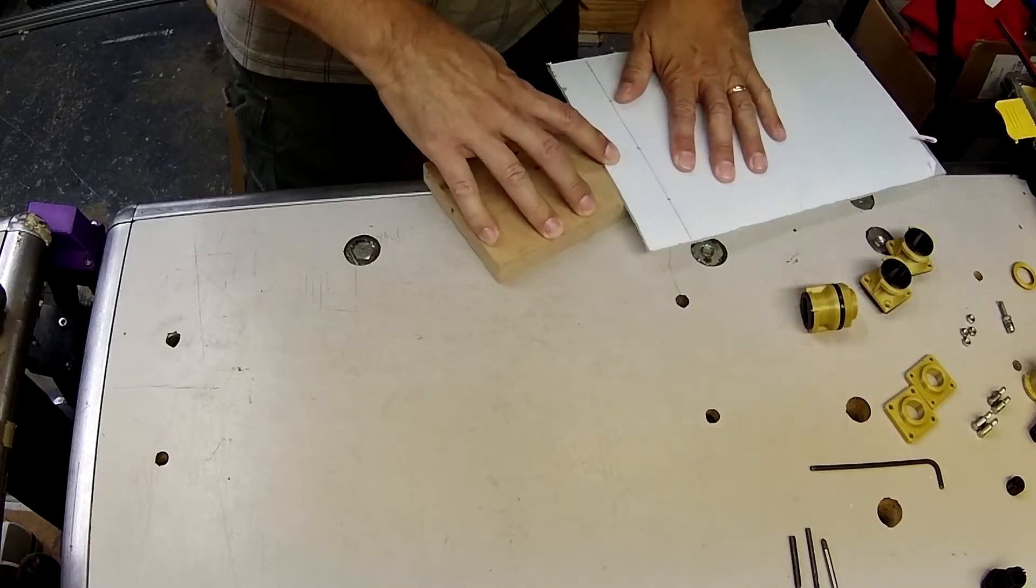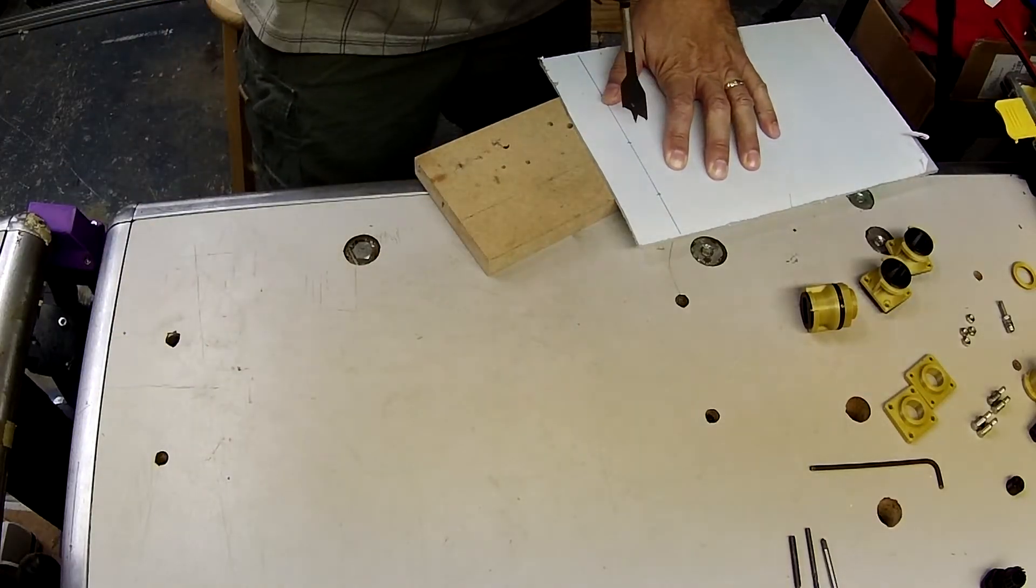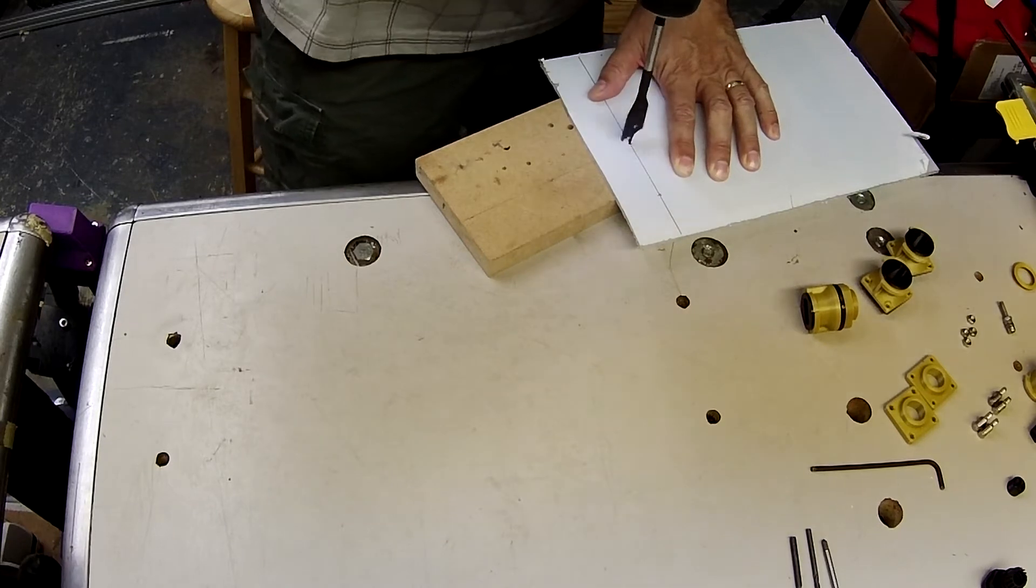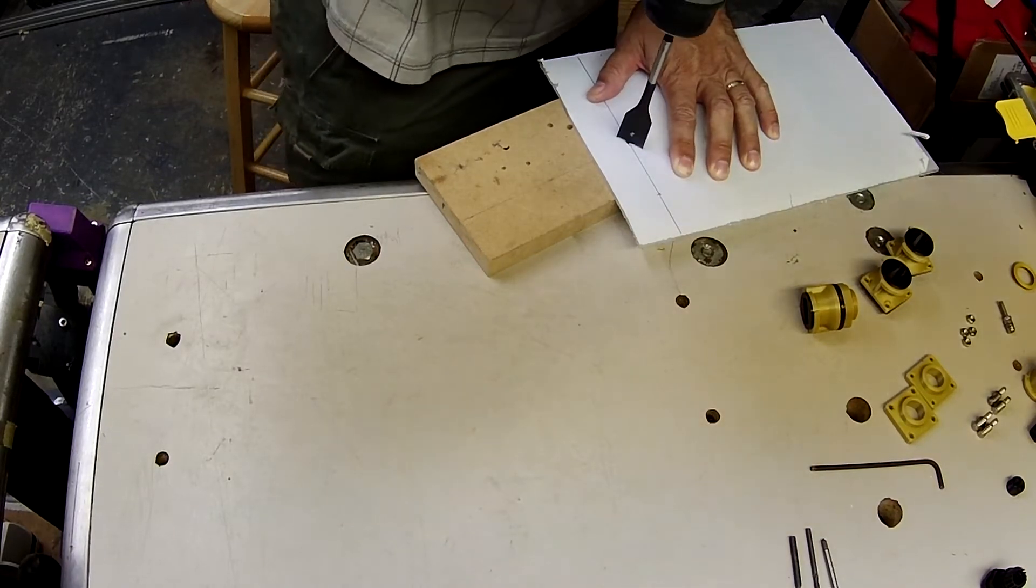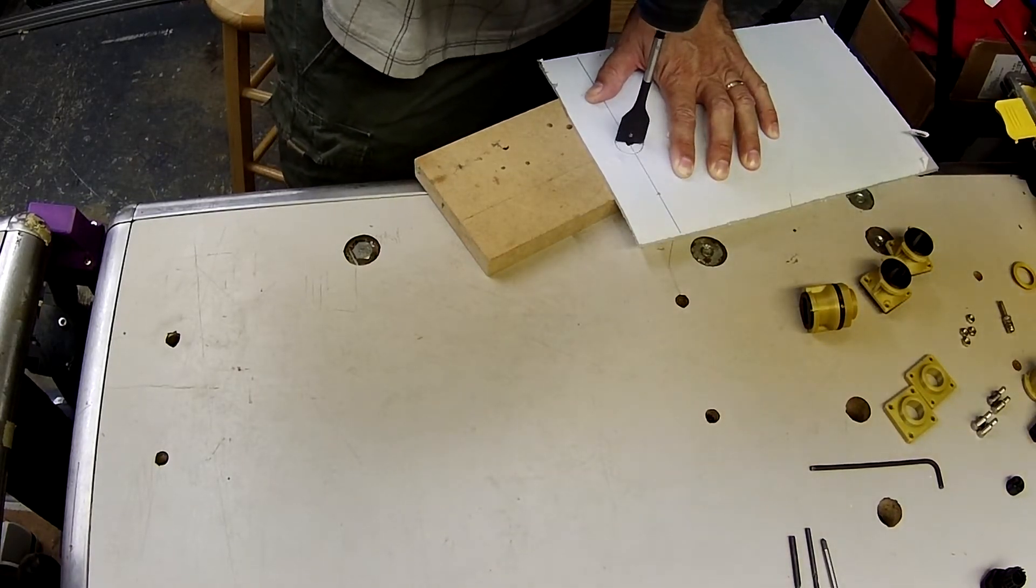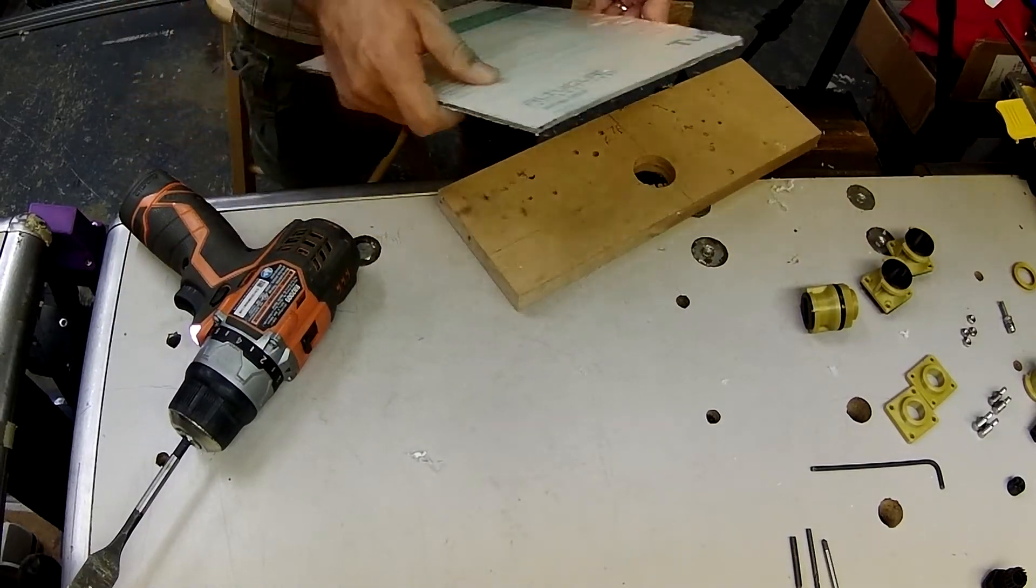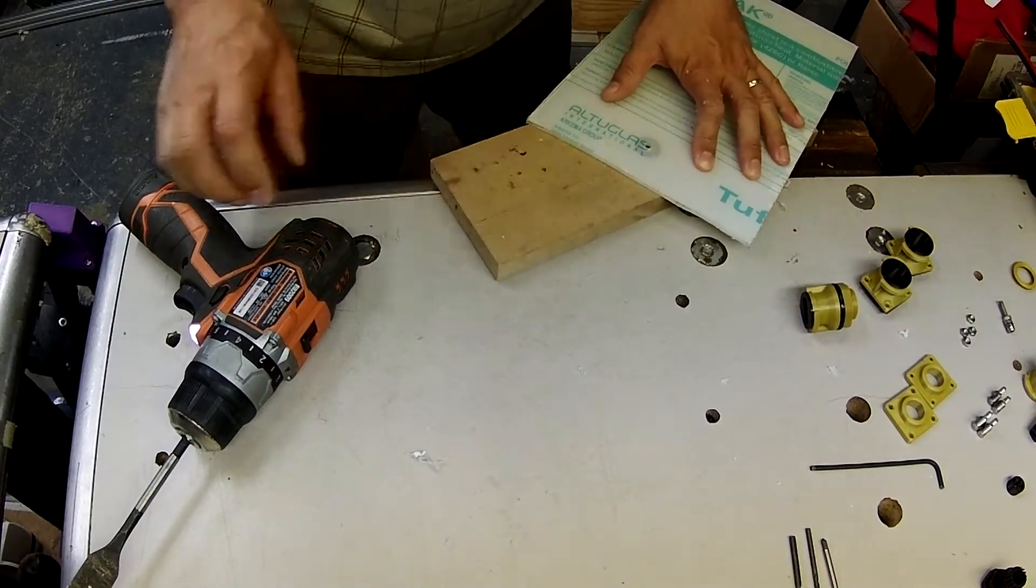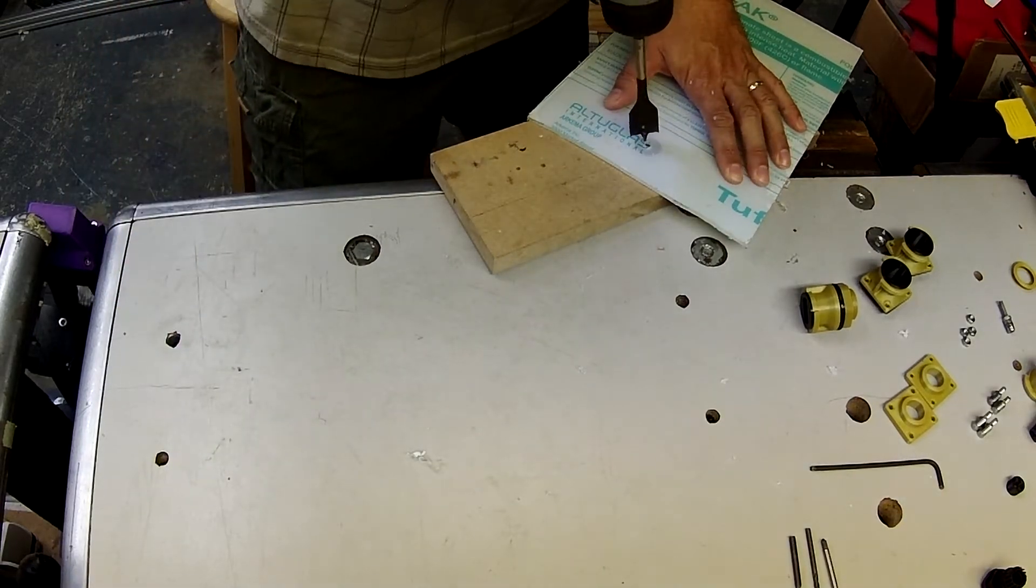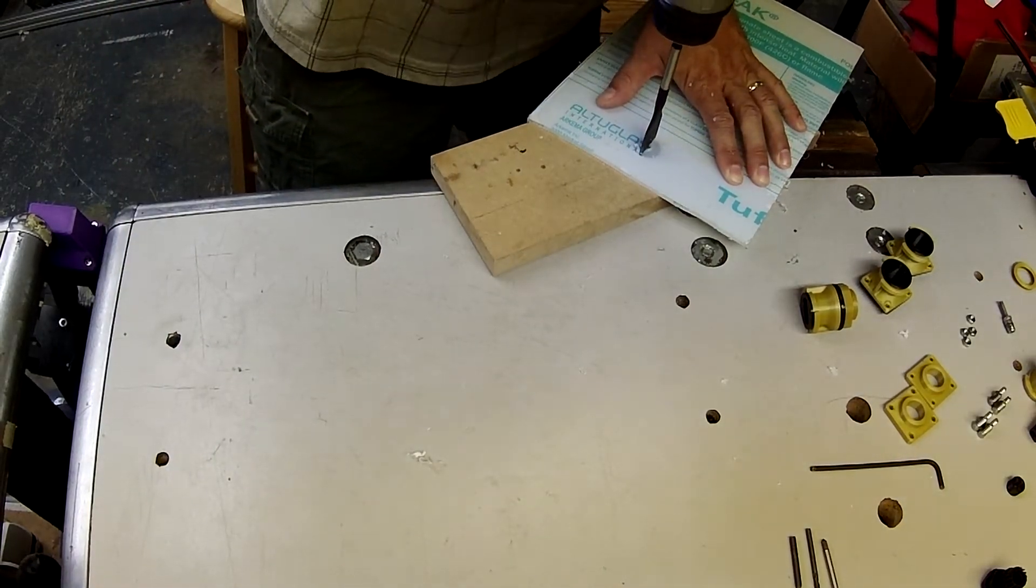Now we'll use a spade drill bit, 7/8 inch spade drill bit, to drill through. The material that I'm drilling through is lexan, which is pretty tough, so I'm going to go from both ends.